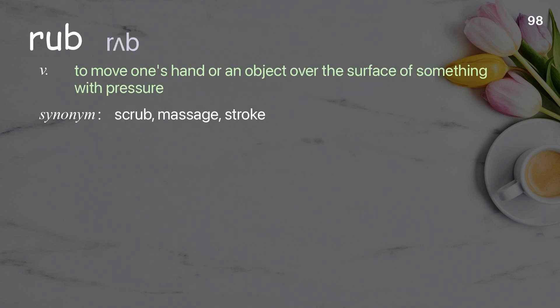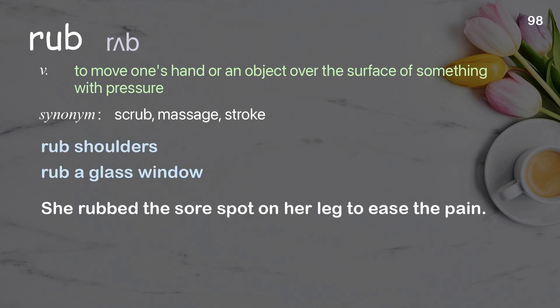Rub: to move one's hand or an object over the surface of something with pressure. Examples: rub shoulders, rub a glass window. She rubbed the sore spot on her leg to ease the pain.